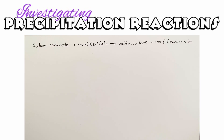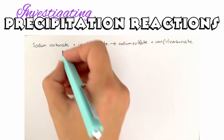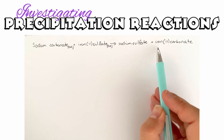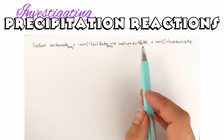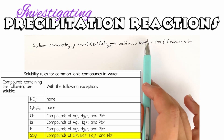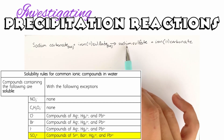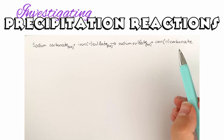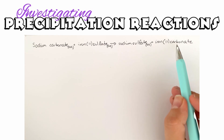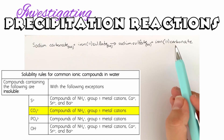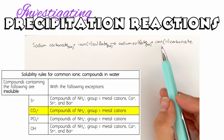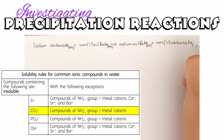Now we need to determine what makes the precipitate. Both compounds enter the reaction in aqueous solution, and one is going to stay aqueous while one forms the precipitate. Looking at our precipitation rules: all sulfates are soluble except for a few exceptions, but sodium is not one of those exceptions, so sodium sulfate is aqueous. Checking carbonates: all carbonates are insoluble except for compounds of ammonium and group 1 metal cations. Iron is not a group 1 metal cation, so iron(II) carbonate is our precipitate.